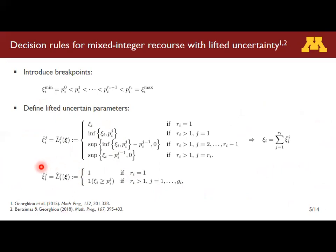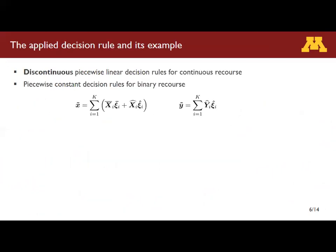The second operator, LH, is a set function depending on the location of the breakpoint. Introducing these lifted uncertain parameters allows us to formulate continuous piecewise linear decision rules for continuous recourse and piecewise constant decision rules for binary recourse. I want to highlight that our decision rules for continuous recourse are not just piecewise linear — they are actually discontinuous piecewise linear, which turns out to be very important when there are both continuous and binary recourse.